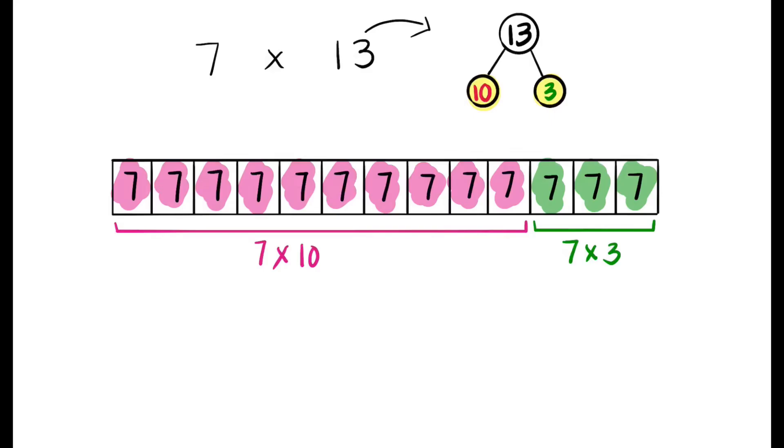So now we can see that 7 times 13 is the same thing as saying 7 times 10 plus 3, because 10 plus 3 makes 13.